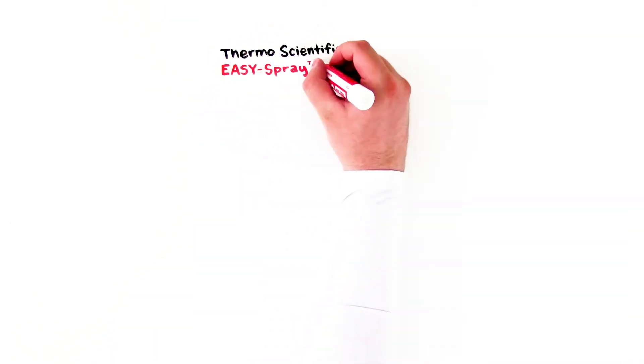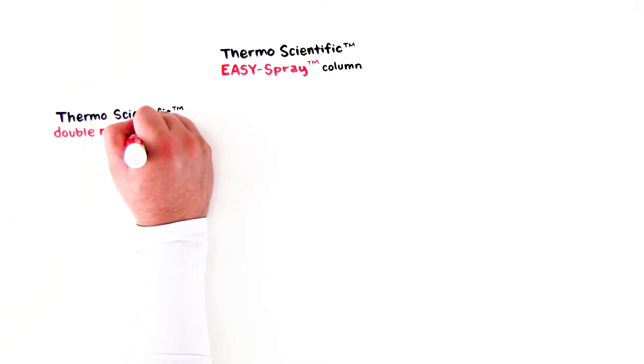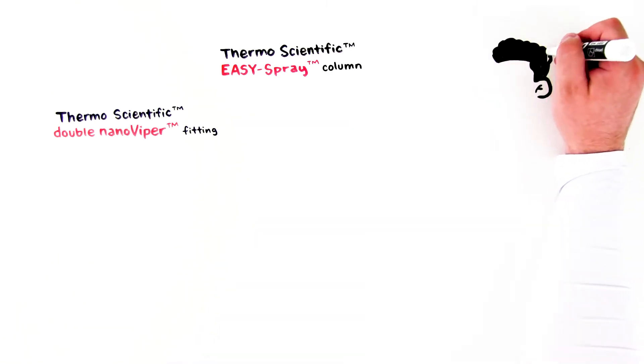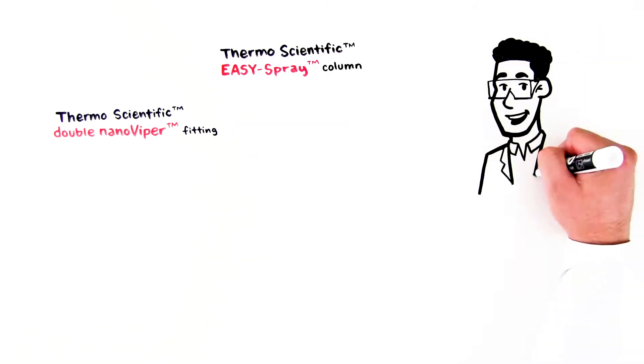The Thermoscientific Easy Spray and Thermoscientific Double Nano Viper are two low-flow column formats that help resolve the issue of tricky connections.